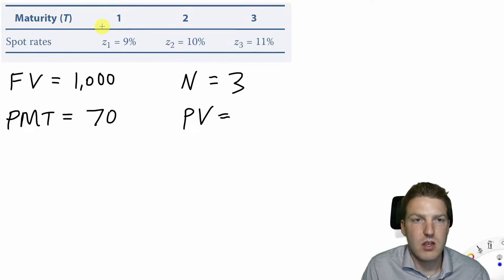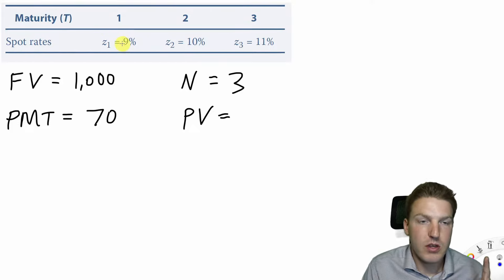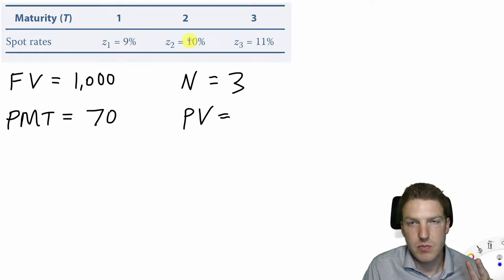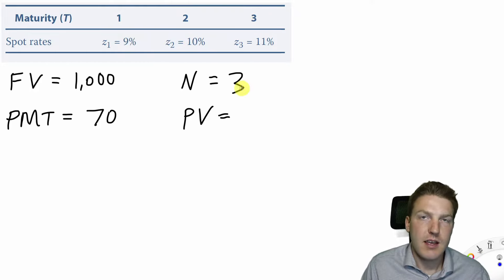At the top of your screen you'll see three spot rates. The one-year spot rate is 9%, the two-year spot rate is 10%, and the three-year spot rate is 11%.